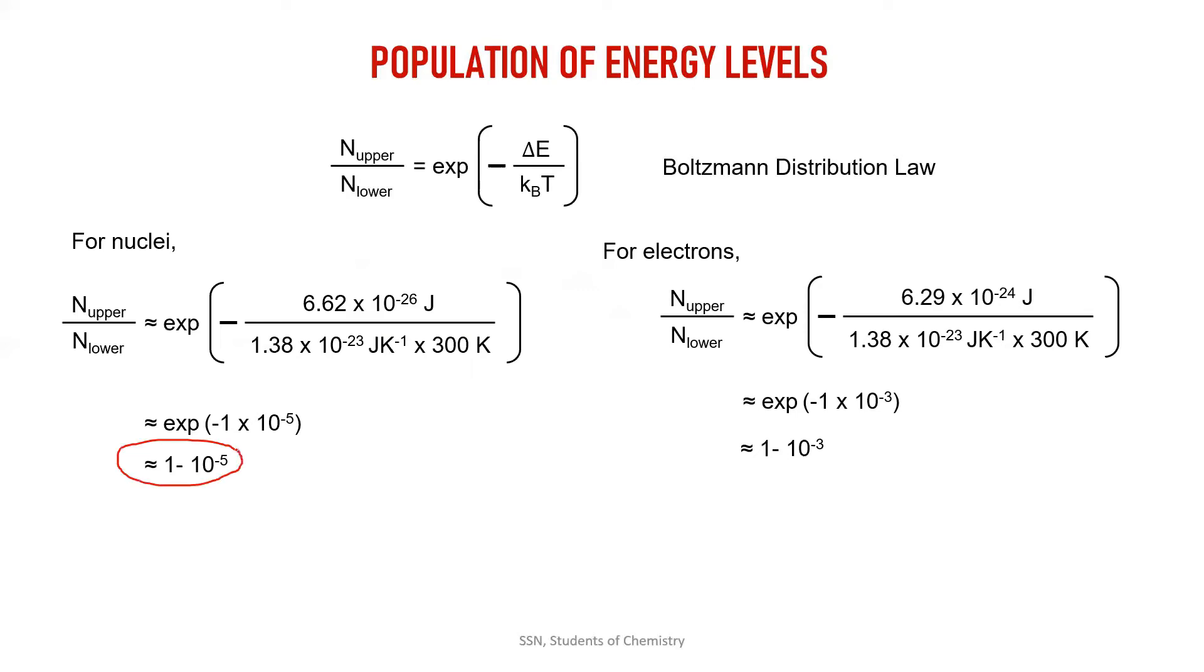This is nothing but 1 minus 0.0001, and this is more or less equal to 1, right? So this ratio is more or less equal to 1. Boltzmann is trying to imply here that from the Boltzmann distribution law in NMR spectroscopy, the energy levels, the lower energy level and higher energy level, the population of these energy levels is more or less equal.